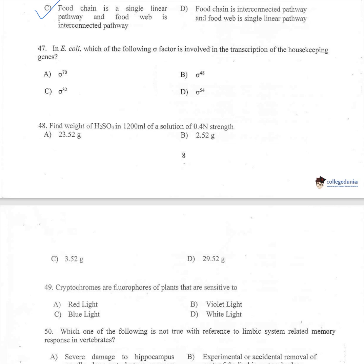Question number 47: In E. coli, which sigma factor is involved in the transcription of housekeeping genes? A: sigma 70, B: sigma 48, C: sigma 32, D: sigma 54. The correct option is A — sigma 70 — because housekeeping genes are stably expressed at all times in the cells.